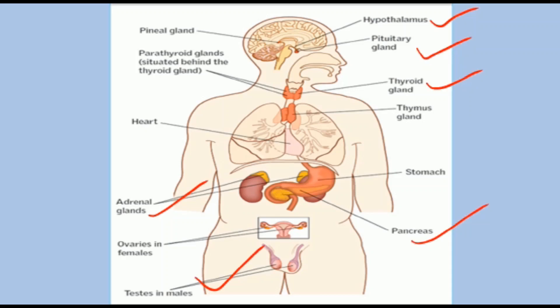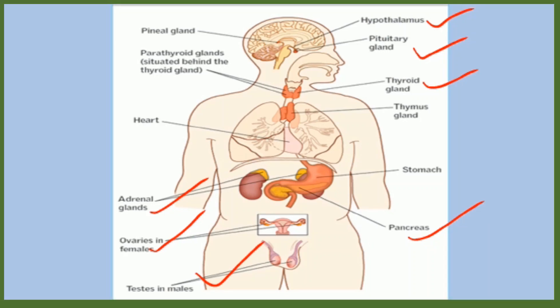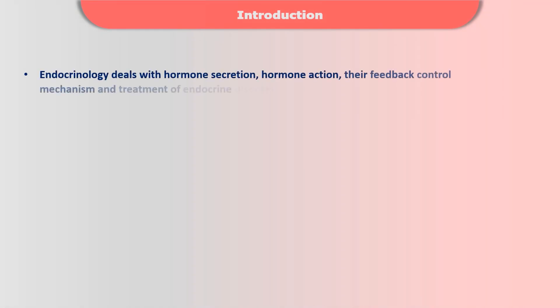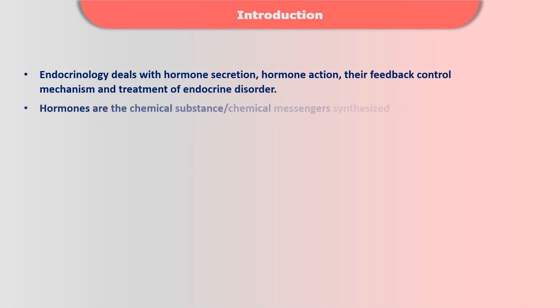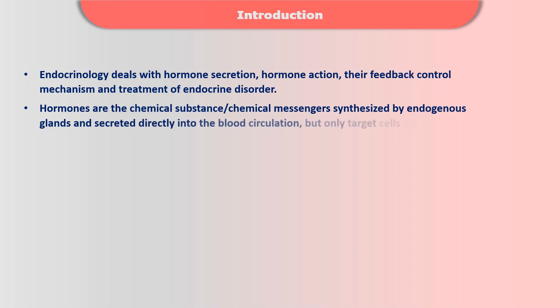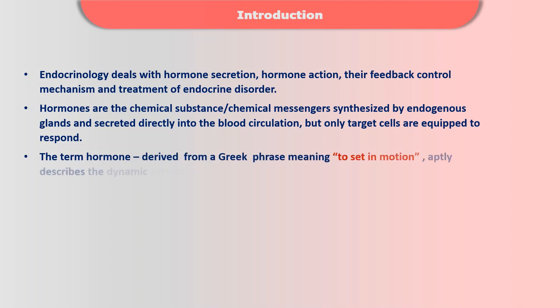The testis secretes testosterone, which is a male sex hormone, and the ovary secretes estrogen and progesterone. Endocrinology deals with hormone secretion, hormone action, their feedback control mechanism, and treatment of endocrine disorders. Hormones are chemical messengers synthesized by endogenous glands and secreted directly into the blood circulation.